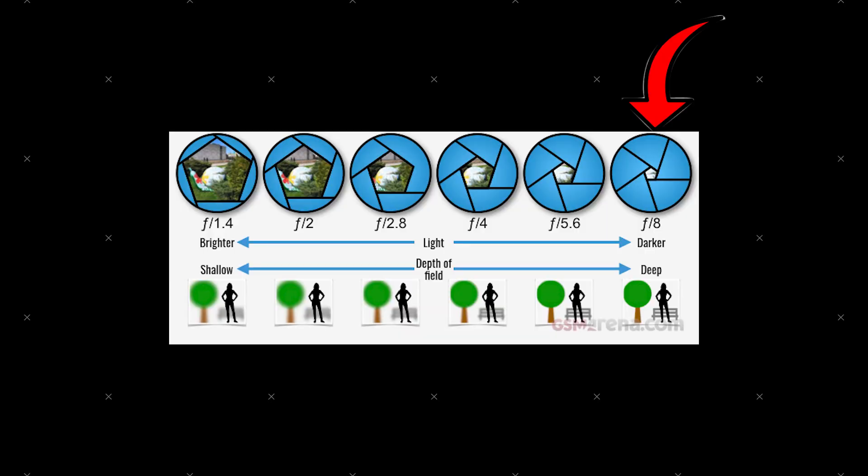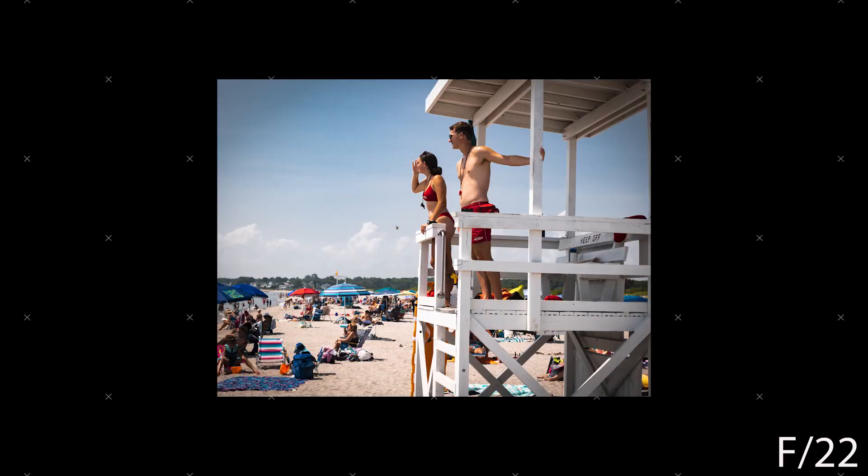Now let's move on to aperture. Aperture refers to the hole in which the lens sees through. The smaller the hole, the less light that's being let in, and the higher the f-stop. The bigger the hole, the more light that's being let in, and the lower the f-stop. The lower the f-stop, the more background blur you're going to have. The higher the aperture, you're going to have little to no background blur. Unlike shutter speed, aperture is not locked in, so you can change and adjust it as you want, whether you're doing photo or video.